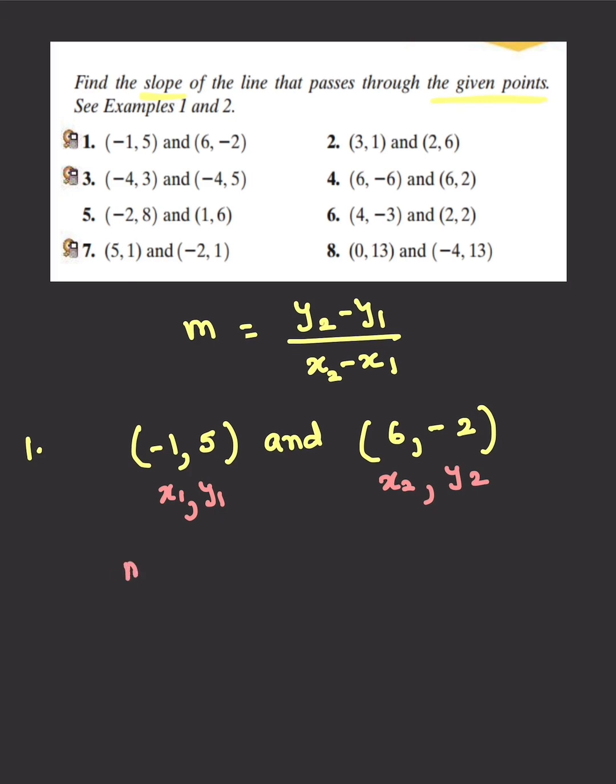As long as your calculation is correct, you will get the same answer. So I'll get y2 minus y1, which is -2 minus 5, and x2 minus x1, which would be 6 minus -1.